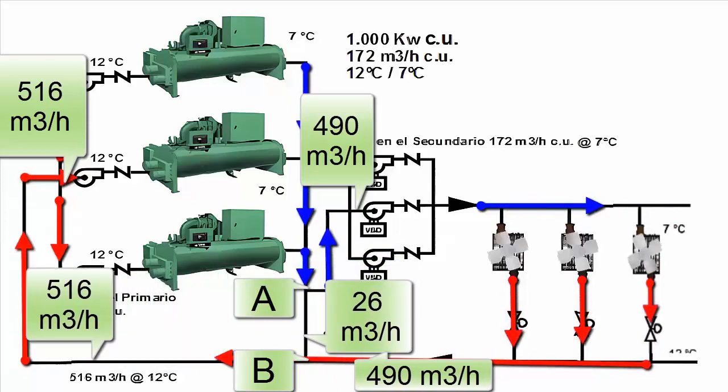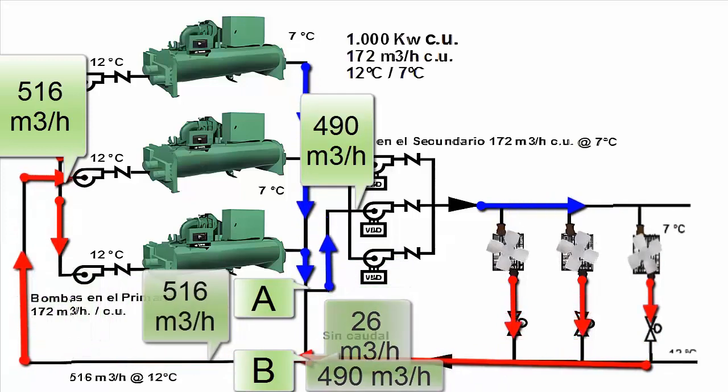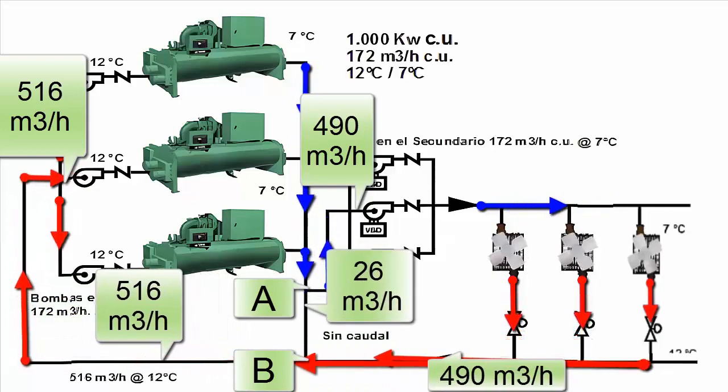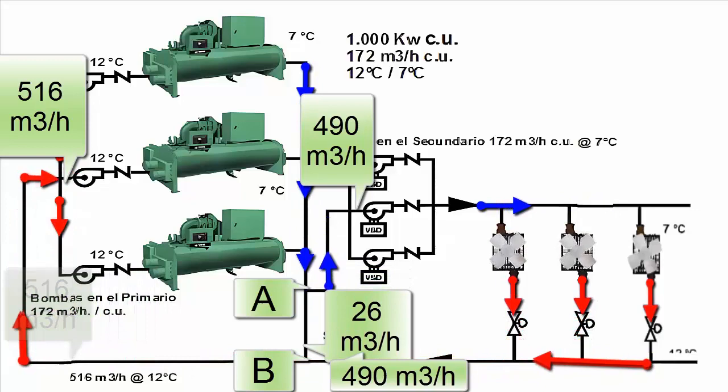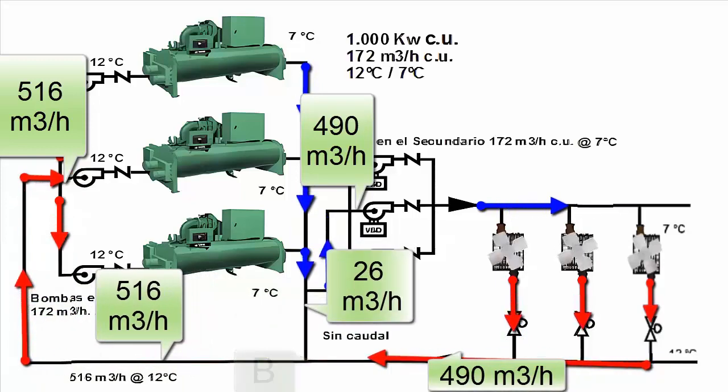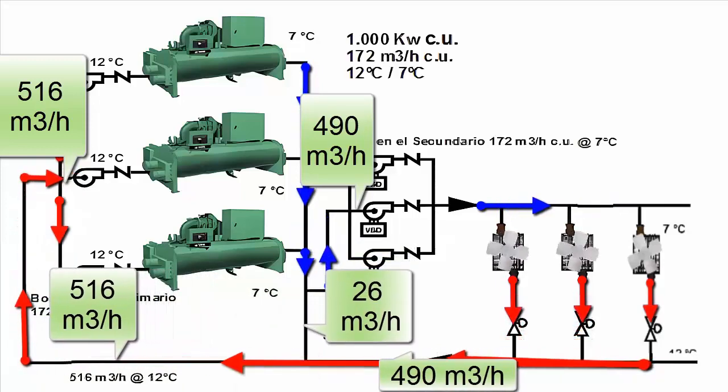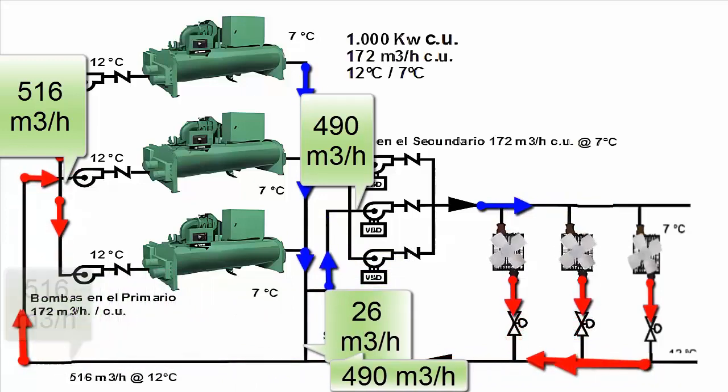In this scenario, since the three water chillers are still running and always handle the same flow, there is excess chilled water that can still be used. Therefore, it is directed through this bypass to contribute to cooling the water returning from the building.